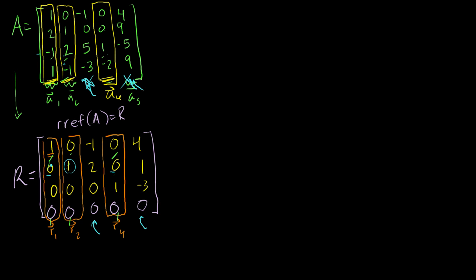In this video, I want to discuss why this worked. Why were we able to just take the corresponding columns? Why did linear independence of these three vectors in RREF imply linear independence of those three vectors in A? And why does the fact that we can represent some column as a linear combination of these three imply we can construct it as a linear combination of our basis vectors?